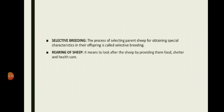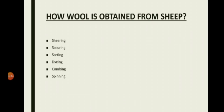Now the most important part of this chapter: how wool is obtained from sheep. There are six steps involved: shearing, scouring, sorting, dyeing, combing, and spinning. We will discuss each of these processes in detail.